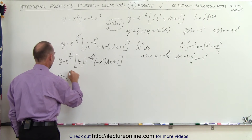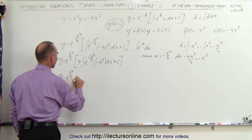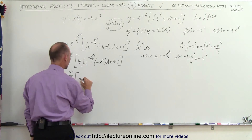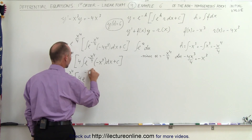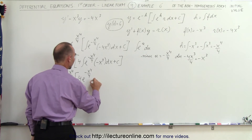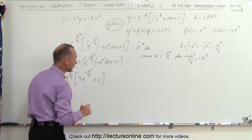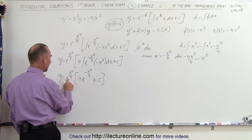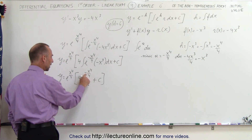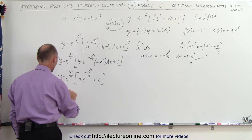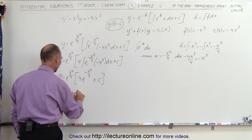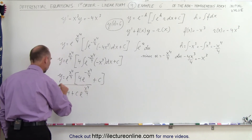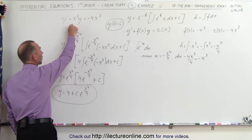We can go ahead and integrate this. So y equals e to the x to the fourth over 4 times 4 times e to the minus x to the fourth over 4, plus a constant of integration. Multiplying through, notice the exponents are equal and opposite — they cancel out — so we get y equals 4 plus C times e to the x to the fourth over 4. That is the general solution to our differential equation.